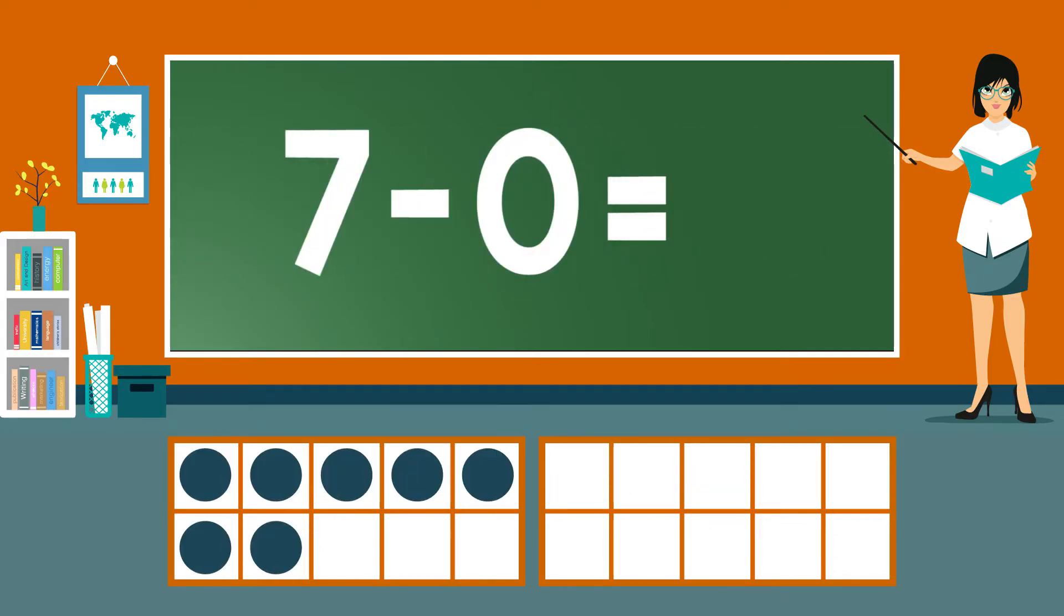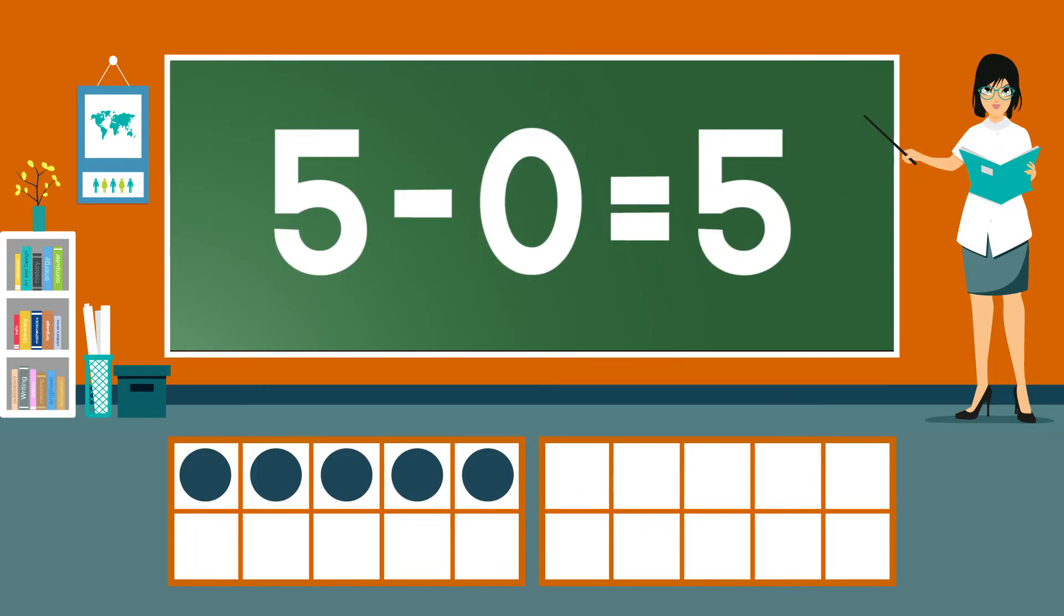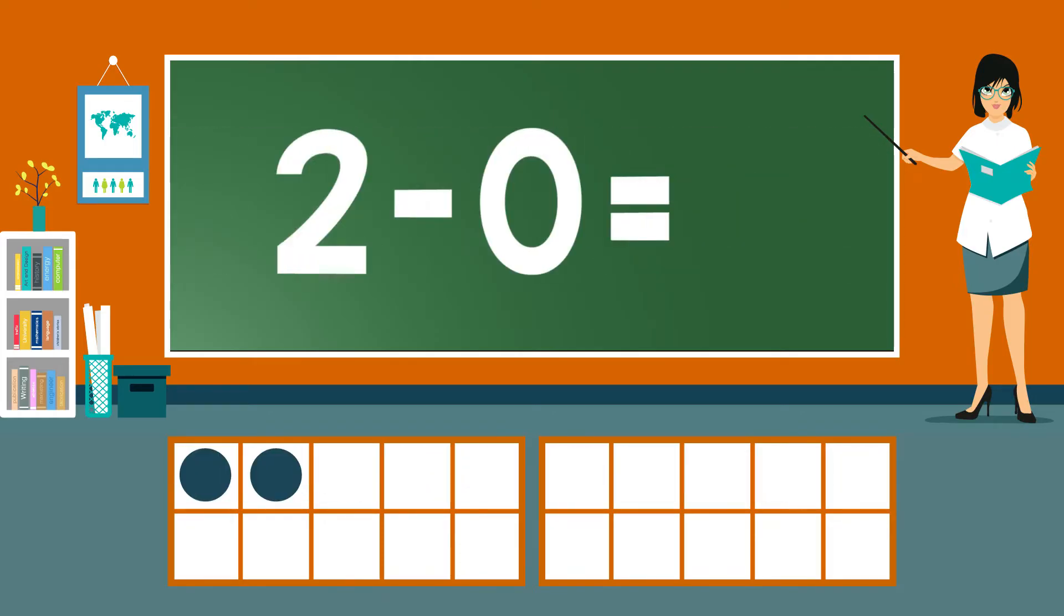7-0 equals 7. 6-0 equals 6. 5-0 equals 5. 4-0 equals 4. 3-0 equals 3. 2-0 equals 2. 1-0 equals 1. 0-0 equals 0.